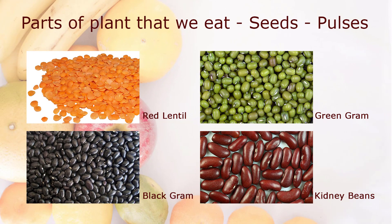Parts of plants that we eat — Seeds, Pulses: red lentil, green gram, black gram, and kidney beans.